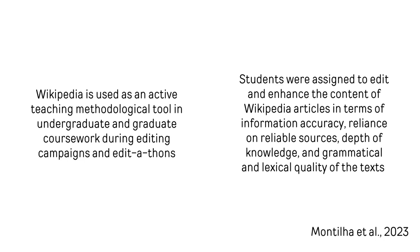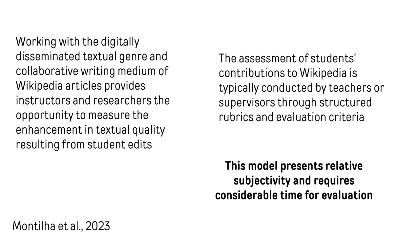In the educational context, the utilization of Wikipedia in undergraduate and graduate coursework involves assigning students tasks to edit Wikipedia articles to enhance information accuracy, ensure social viability, and also improve textual quality. Collaborative editing of Wikipedia articles offers students and researchers a platform to improve textual quality through students' edits. Evaluation of students' contributions usually involves using structured rubrics and criteria.